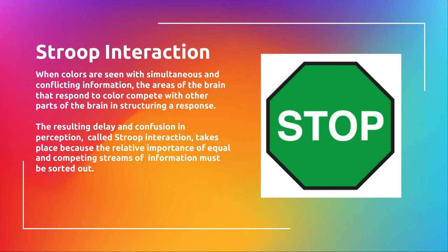You get this weird undulating movement because of that color vibration. You can purposely select colors and use color and pattern to get this sort of intense color vibration or color reaction. So you can create optical illusions — you can create a sense of movement, literal movement, without actually having an object move.